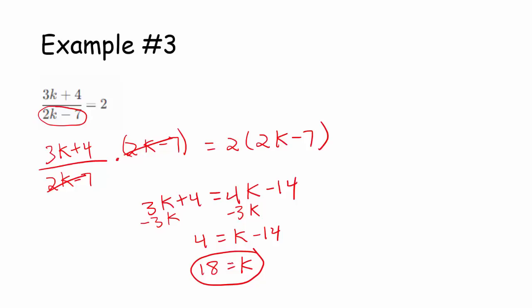So 18 checks out. That is not an extraneous solution. The value of 18 does not make either side of the equation undefined. It would solve the equation. If I went back and plugged in 18 for k, I would get 2 equals 2.